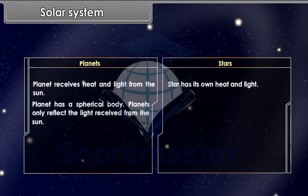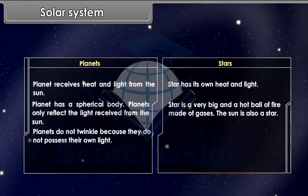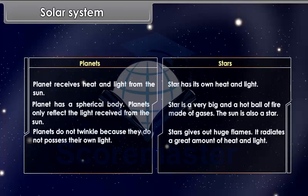Planet has a spherical body. Planets only reflect the light received from the sun. Star is a very big and hot ball of fire made of gases. The sun is also a star. Planets do not twinkle because they do not possess their own light. Stars give out huge flames and radiate a great amount of heat and light.